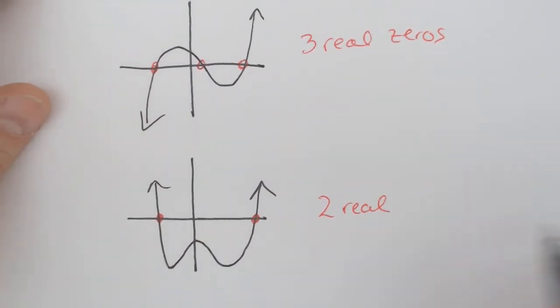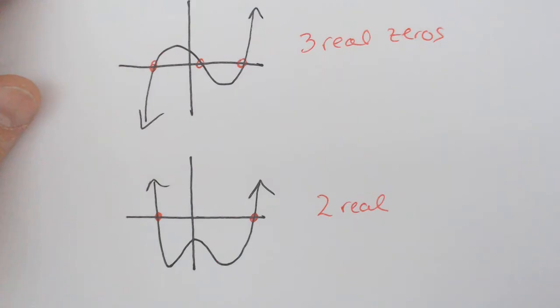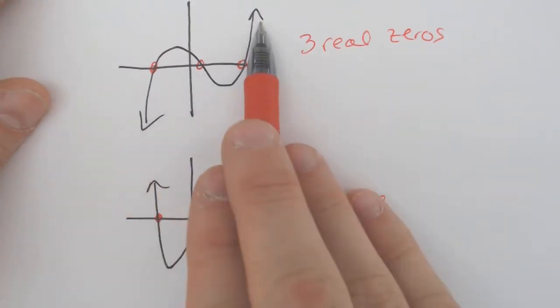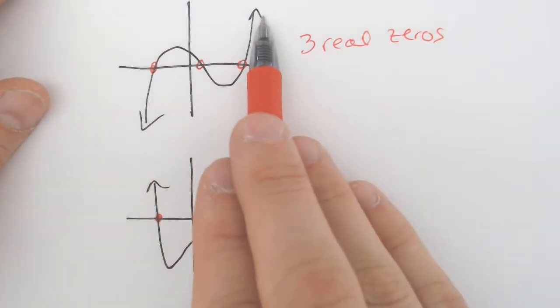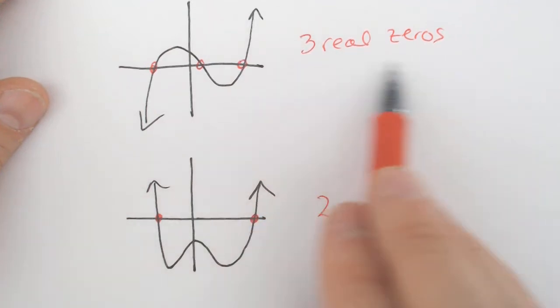We also should take some context clues. Because this is going in the same direction, we should have an even amount of zeros when we add up the real and imaginary, versus up here, where we had opposite directions. One was going down, the other was going up. So we had an odd amount of real and/or imaginary zeros when we add them up.